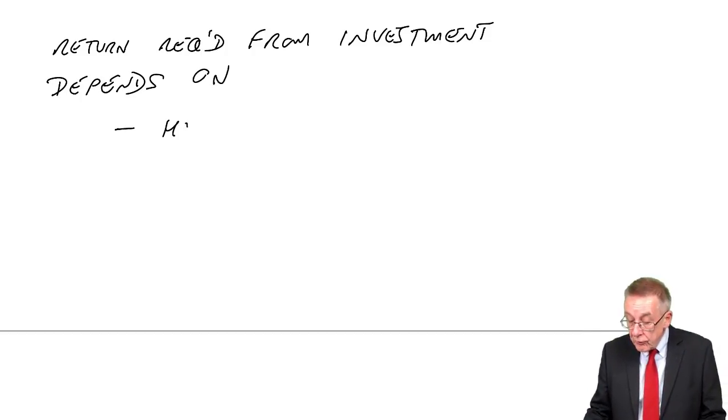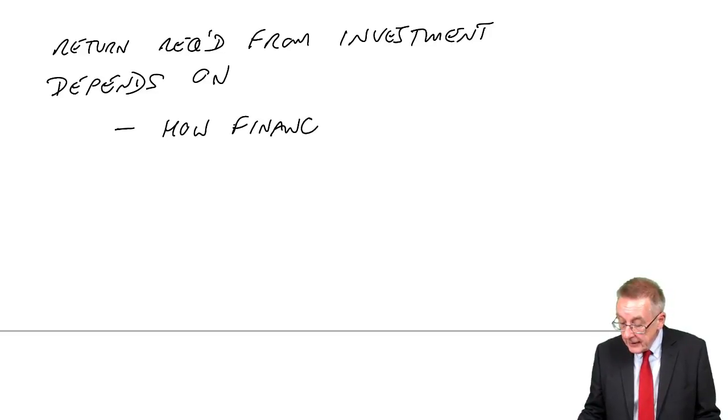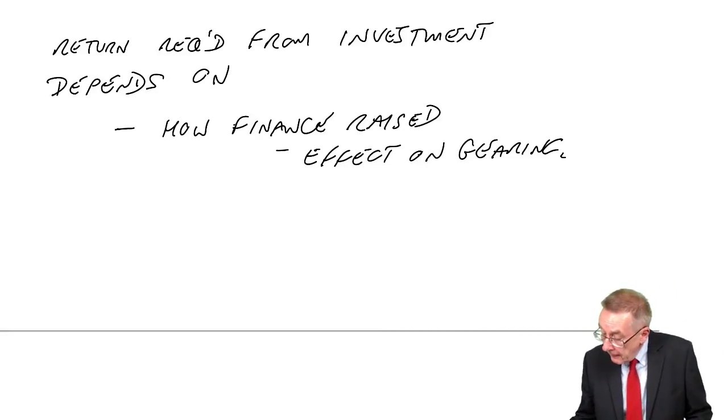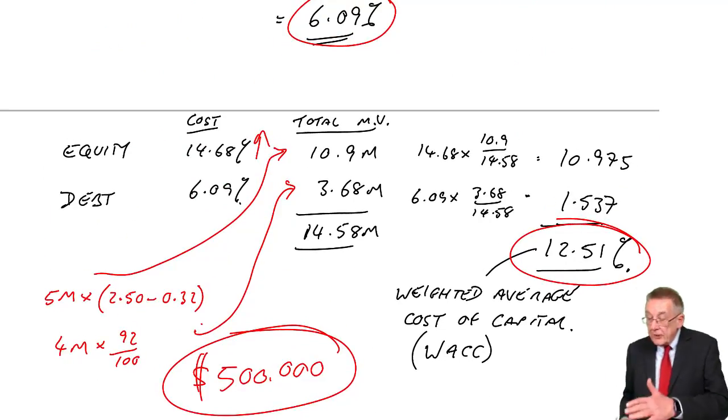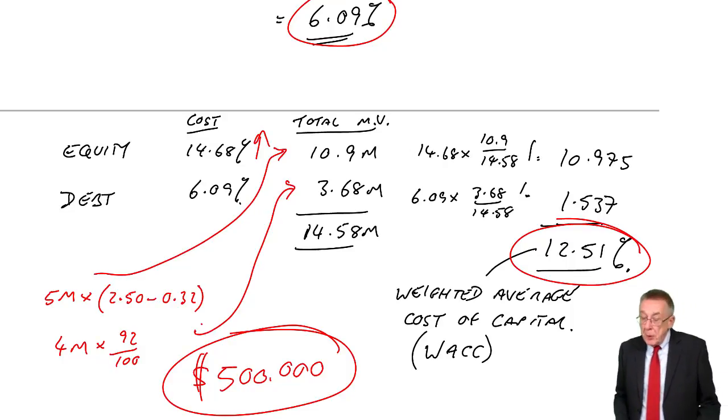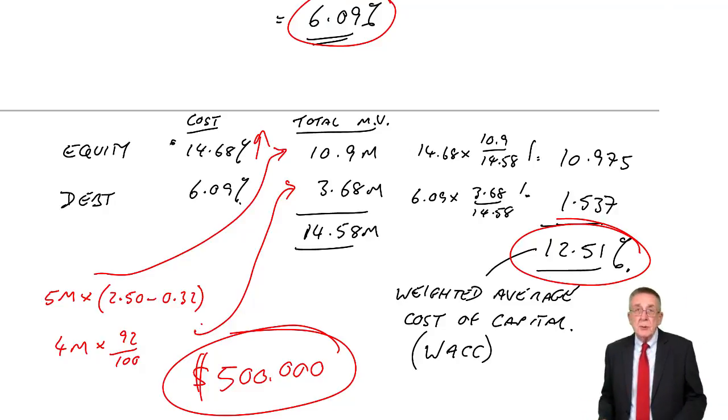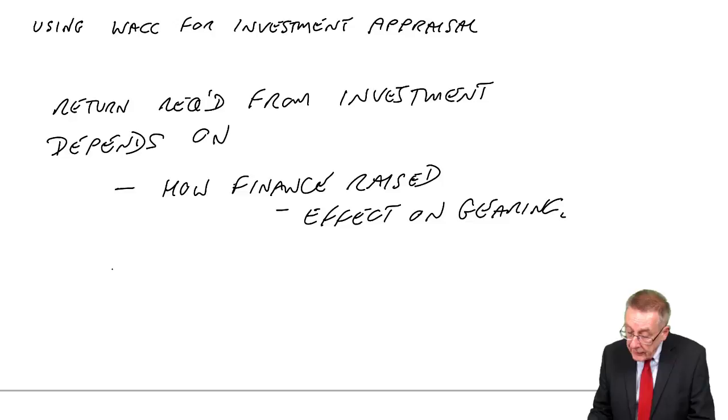The return required from a project, from an investment, depends on firstly, how the money is raised, finance raised. And specifically, I mean, the effect on the gearing. To yourself, if we change the gearing. If there's more debt or more equity, the weighting changes. And if the weighting changes, that changes the weighted average. But more importantly, if we change the gearing. If more finance at a high cost or a low cost and the return to shareholders will change, the weighted average would be affected. The other thing it depends on is the riskiness of the new project.